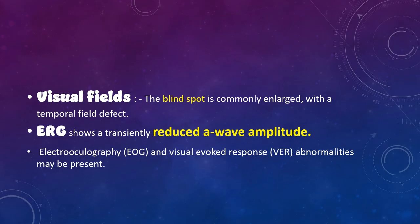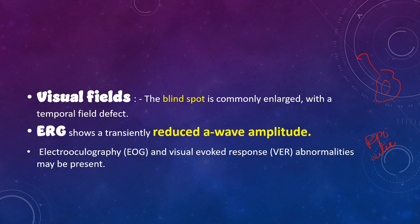On visual fields, the blind spot is commonly enlarged because the lesions can concentrate around the optic disc. On ERG, since the A-wave comes from the RPE and outer retina — particularly the photoreceptors — and these white dot syndromes primarily affect the outer retina and RPE, ERG will show reduced A-wave amplitudes.